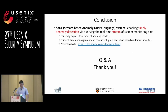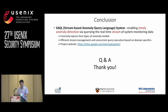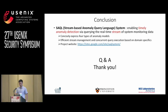In conclusion, in this work we have designed and built a system called CYCLE, a stream-based anomaly query language system. Our system works on streaming system monitoring data to enable timely anomaly detection. It provides a concise and expressive language for four types of anomaly models, and we built our query execution engine using domain specifics to speed up execution. We have deployed our system at NEC Labs America. Thank you.